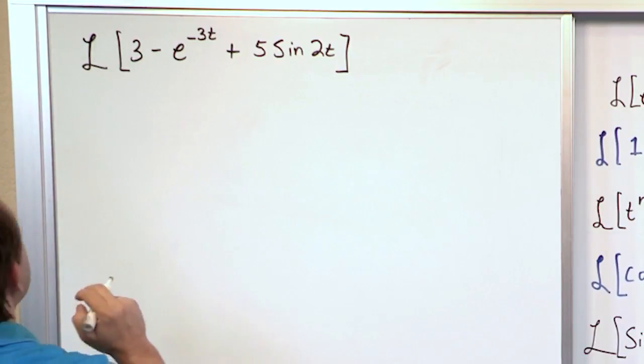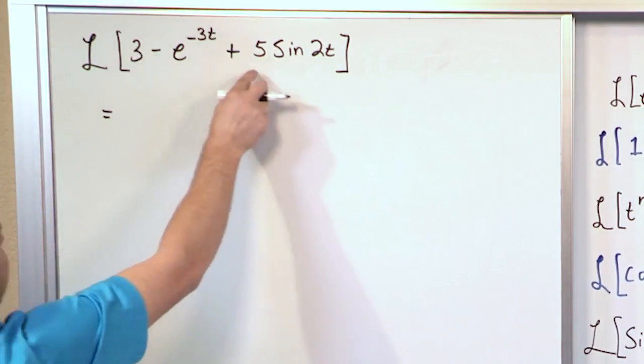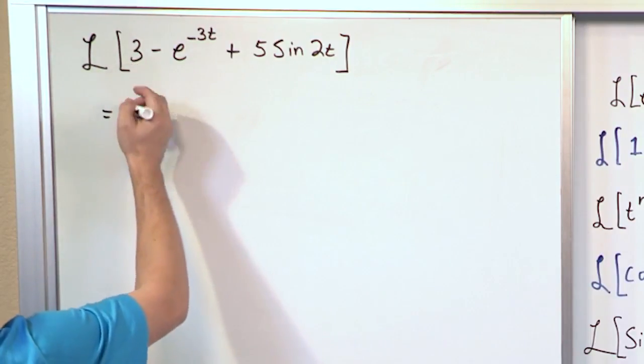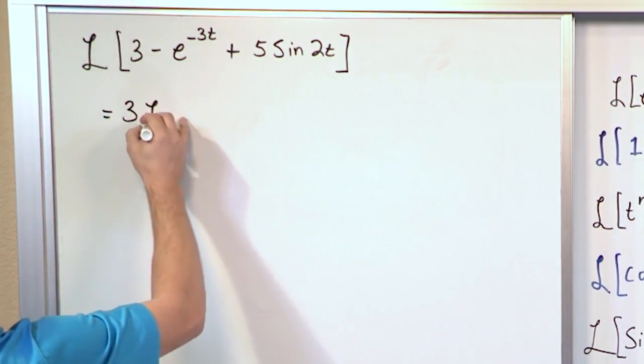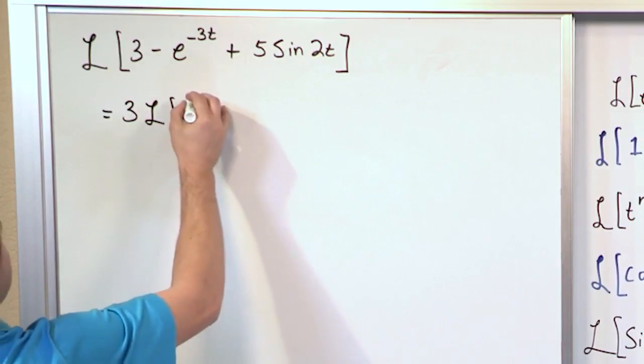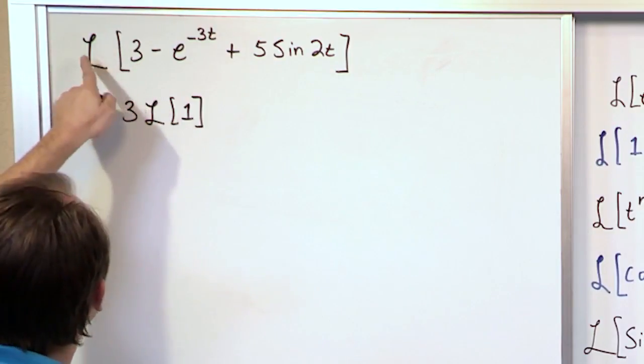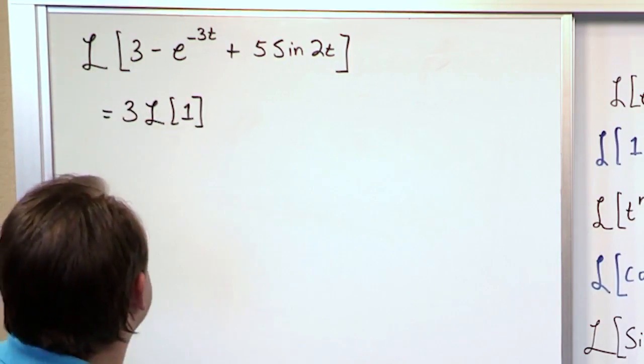Now to make it a little bit more clear, before we start applying the actual transform rules, let's rewrite it. This is going to be basically 3 times the Laplace Transform of 1. Make sure you understand that because 3 times 1 is 3, so you can pull the 3 out and Laplace Transform what's left which is just 1.